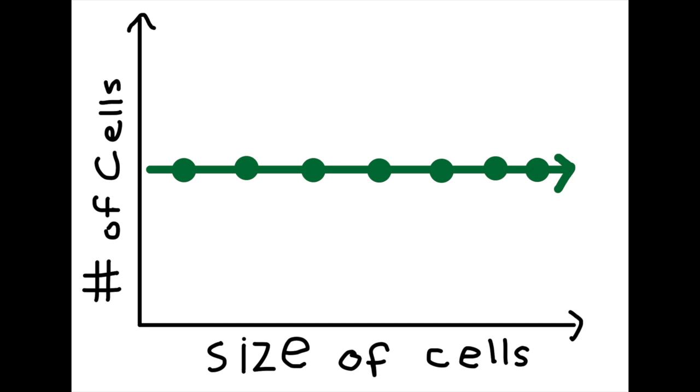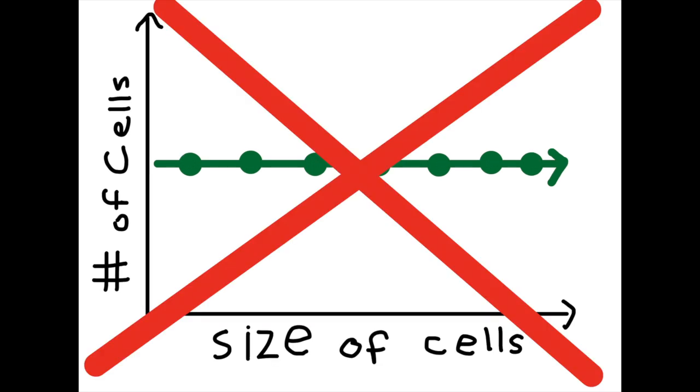That is, that in early development of an organism, cells grow in size, but the number of cells remain constant. However, this is false because in early development of an organism, the cells grow in size, but they are also increasing in number.